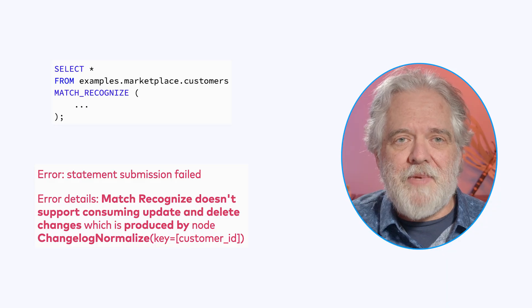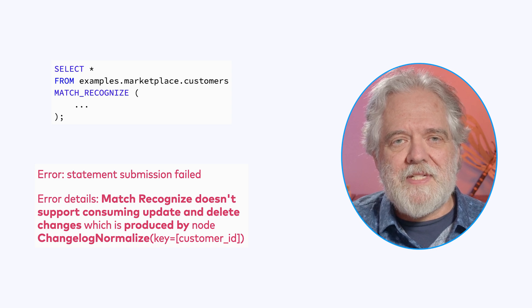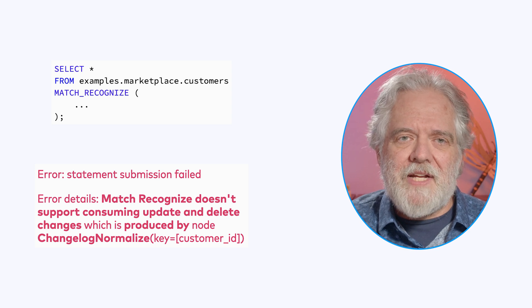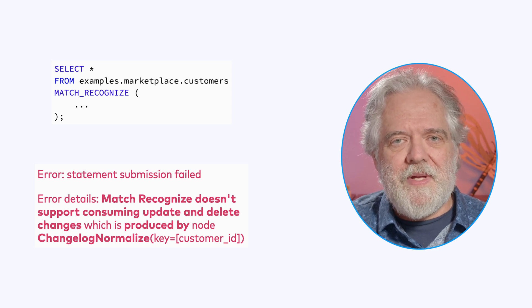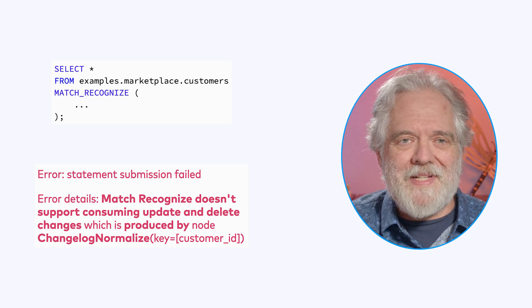Now, why is this interesting? It turns out that seemingly subtle changes to a query can have significant impacts on the query plan, and this in turn can have large impacts on the resource requirements and ultimately the cost of its execution. And sometimes the planner won't be able to handle what you've asked it to do. This rather innocent looking query is trying to match a pattern against the customers table, and the planner is saying that can't be done. The error message says match recognize doesn't support consuming the update and delete changes produced by changelog normalize.